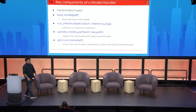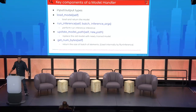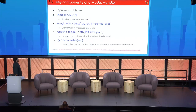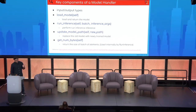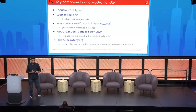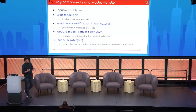Once you've decided on your input and output types — you can support both NumPy tensors and other types in a single model, but it's usually recommended to use just one type for simplicity when writing internal functions like tensor stacking. These are the four key functions for writing a model handler: load_model, where you return the loaded model; run_inference, where the magic happens — this is where you call model.predict; update_model_path for hot-swapping; and get_num_bytes to calculate the size of batch elements.